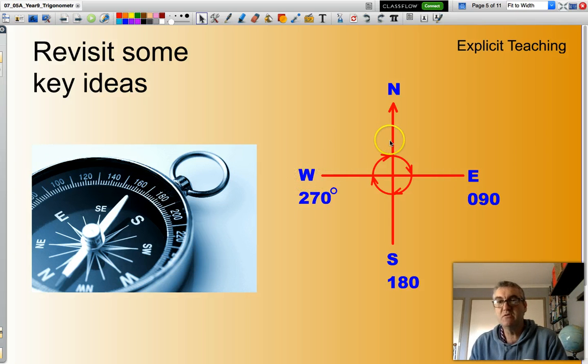And the angles corresponding to each of those points: east is at 90 degrees, south is 180 degrees, west is 270 degrees, and north is back at either zero degrees or 360 degrees.